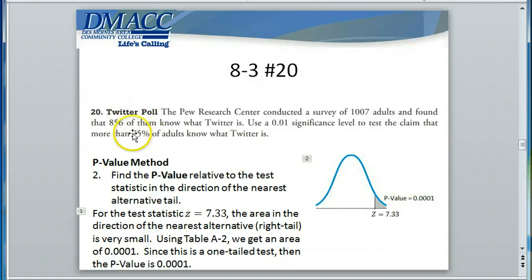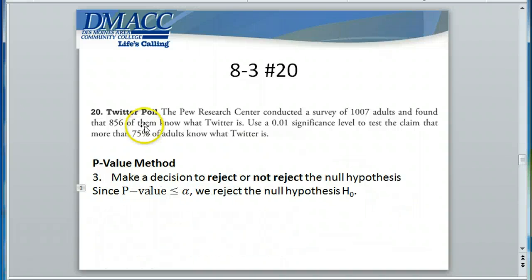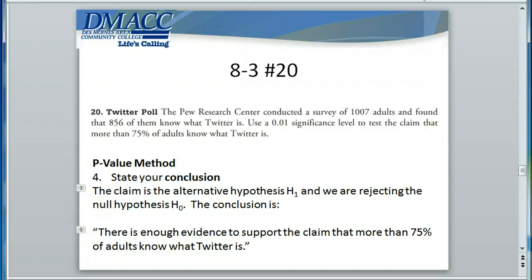The likelihood of getting a sample statistic of 85%, assuming the true proportion of adults who know what Twitter is is 75%, is less than 1 hundredth of a percent — a rare event. This tells us more than likely that our assumption that the null hypothesis is true is incorrect. Because the p-value is less than or equal to the level of significance of 1%, we reject the null hypothesis, and our conclusion is there is enough evidence to support the claim that more than 75% of adults know what Twitter is. The 1% significance level is our threshold for rare events.